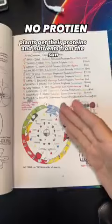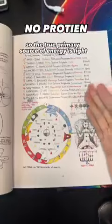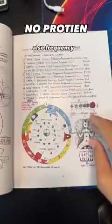And to blow your mind even more, plants get their proteins and nutrients from the sun. So the true primary source of energy is light, also frequency.